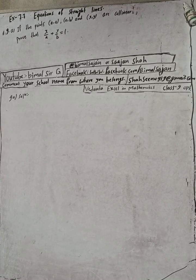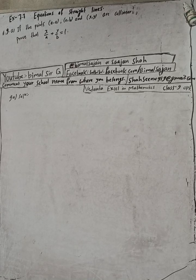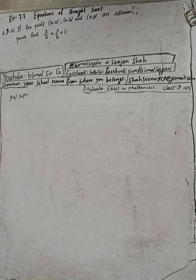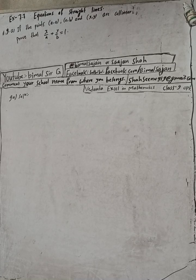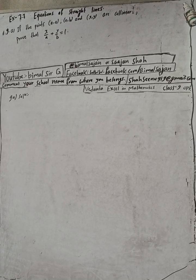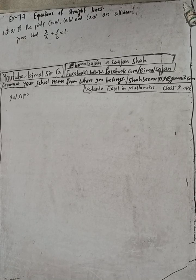Hi class 9 and 10 students, welcome back to Bimal Sarji's YouTube channel. This is question number 9a, exercise 7.7, equations of a straight line, class 9 OPT maths. I am going to solve this question. If you want other exercises from an incomplete playlist, you can comment, because I am going to create a playlist of all the exercises I am going to solve.